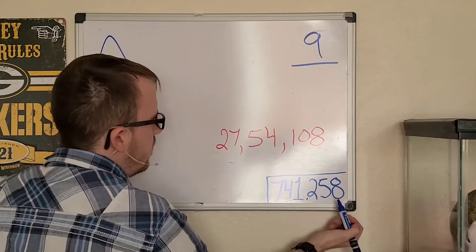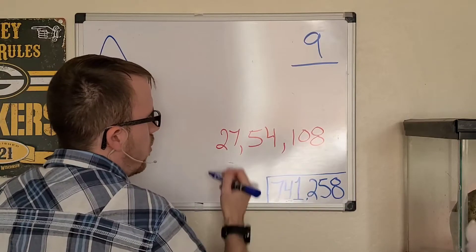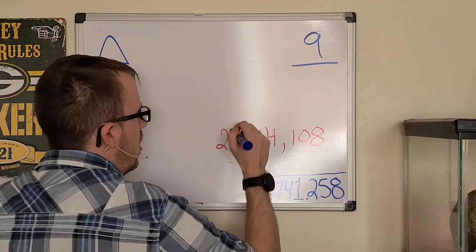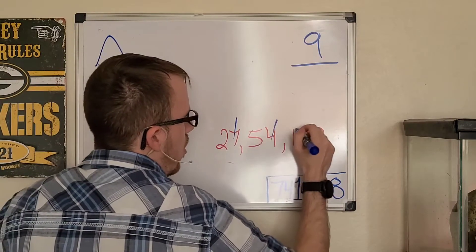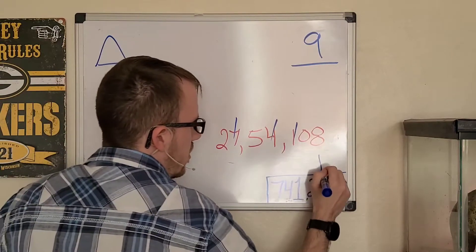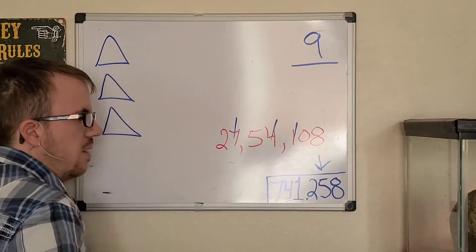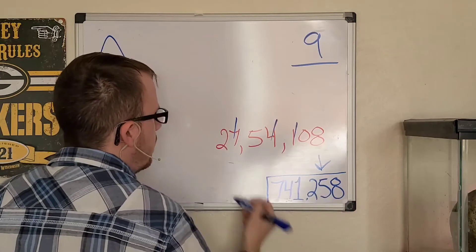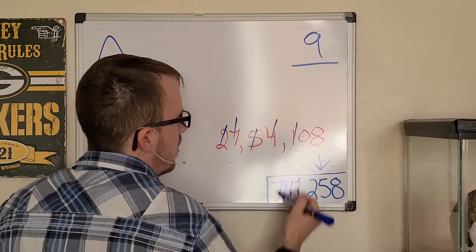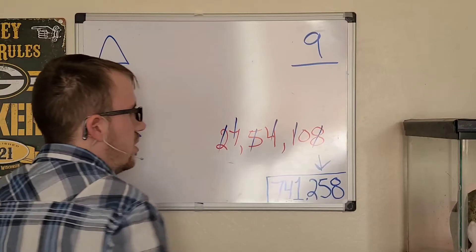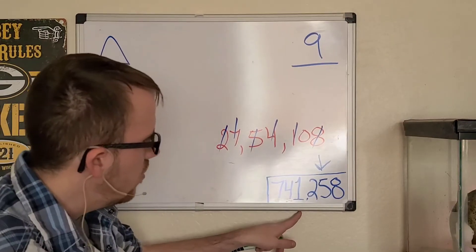So we're going to find 258 by removing 741 from the three most holy numbers. Remove the seven, remove the four, remove the one - leaves you with two, five, and eight. Same thing happens if you remove the 258. Remove the two you get seven, remove the five you get four, remove the eight you get one.